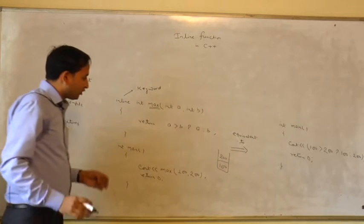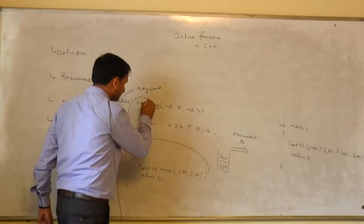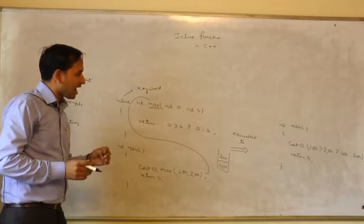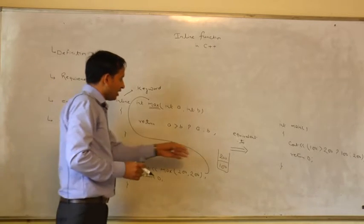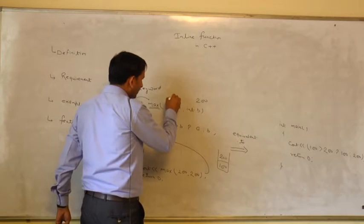And without inline function, control pass to the definition of function and arguments are popped onto the stack. 200 will be stored in B and 100 will be stored on A.